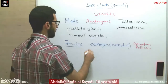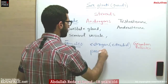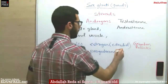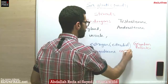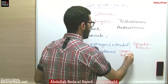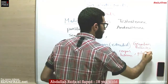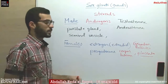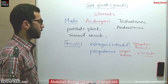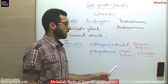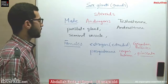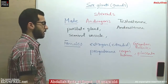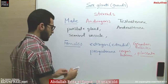Then we have progesterone, which is secreted from the corpus luteum in the ovaries and the placenta. In case of pregnancy, this helps in increasing the vascularity of the walls of the uterus so that it can be ready to receive the fetus. Also, progesterone helps in the appearance of changes in the mammary gland for lactation later.